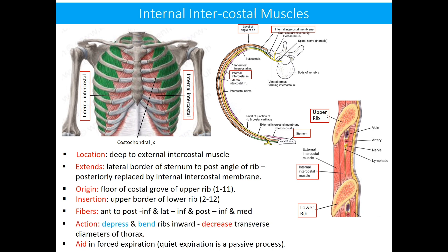The internal intercostal muscle depresses and bends the ribs inward, hence decreasing the transverse diameter of the thorax. It aids in forced expiration, and we already know that quiet expiration is a passive process.